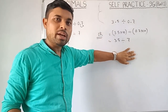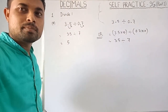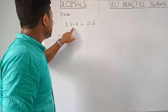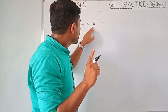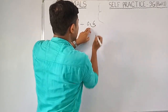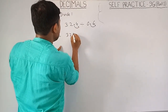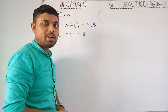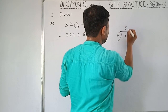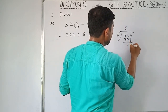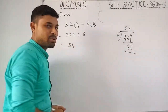Question 1c: 32.4 divided by 0.6. First we move the decimal point for the divisor - how many places? One place. So the same here, you have to move it one place. That means 32.4 divided by 0.6 becomes 324 divided by 6. Just do the division: 324 by 6, and the answer is 54.